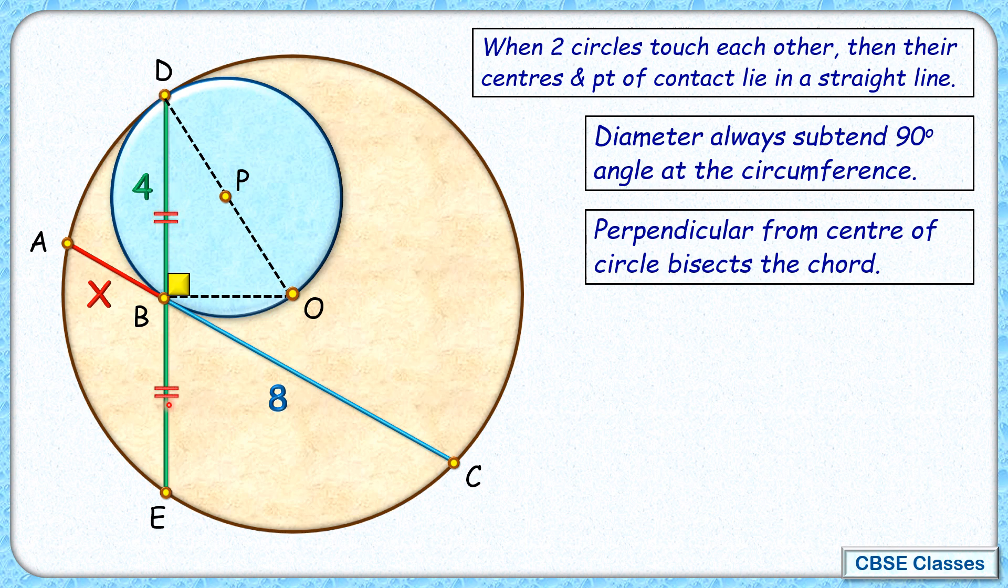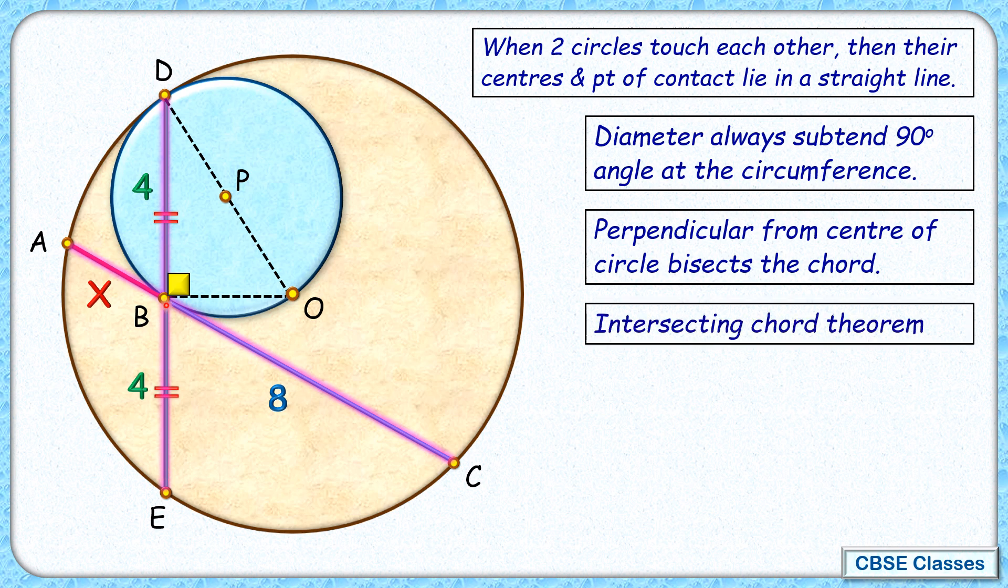Now if you look at the chord AC here and chord DE here, these two chords are intersecting at point B. And by intersecting chord theorem or power of point theorem, we know that AB times BC will be DB times BE. Putting the values here: x times 8 will be 4 times 4.